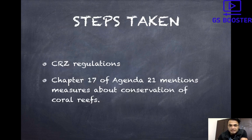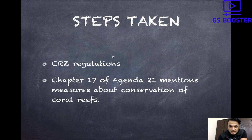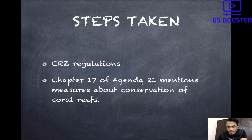Now let's look at what steps have been taken for the protection and preservation of corals. CRZ regulations were first introduced in 1991, then revised in 2011, and a third time in 2018 after the formation of the Shailesh Nayak Committee. CRZ regulations focus heavily on conservation of corals. CRZ areas are demarcated into four types: CRZ 1, 2, 3 which are land-side areas near the seashore, and CRZ 4 which is on the water side — wherever coral reefs are found.